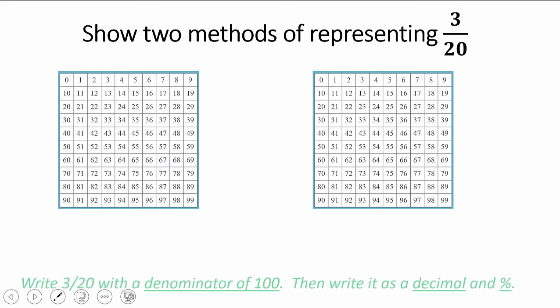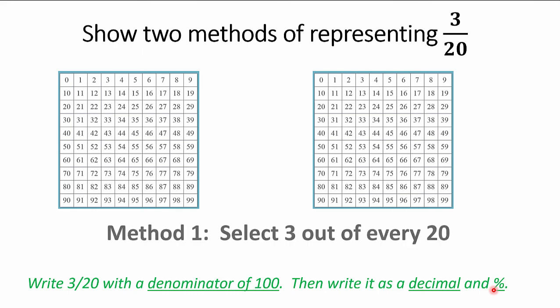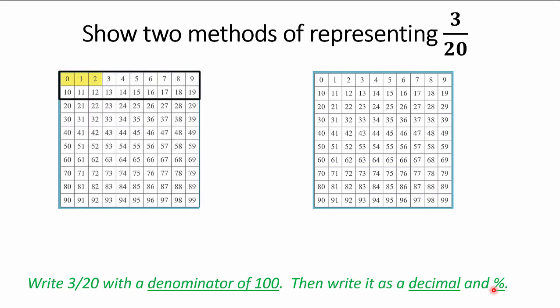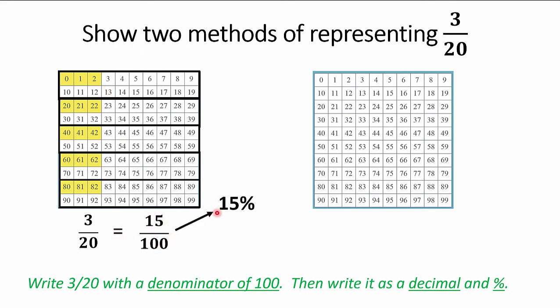I've got two more. Three-twentieths — same approach: turn denominator into a hundred, find the decimal, find the percentage. Make your little worlds: three out of every 20. They're all three-twentieths. But they're also 3, 6, 9, 12, 15 out of 100 — fifteen hundredths. They're equal. Percentage form: 15%. Decimal form: 0.15.